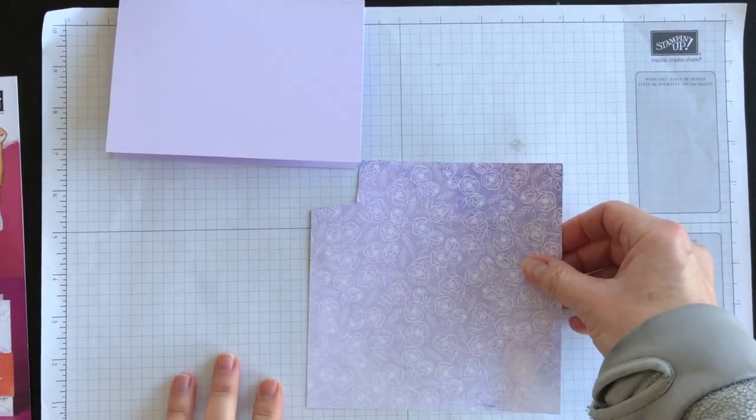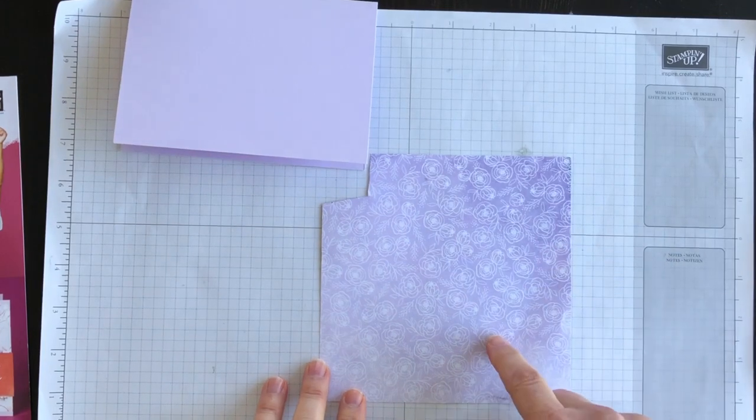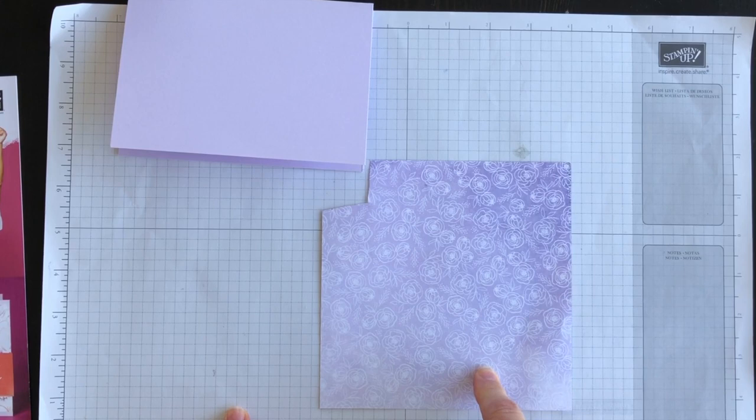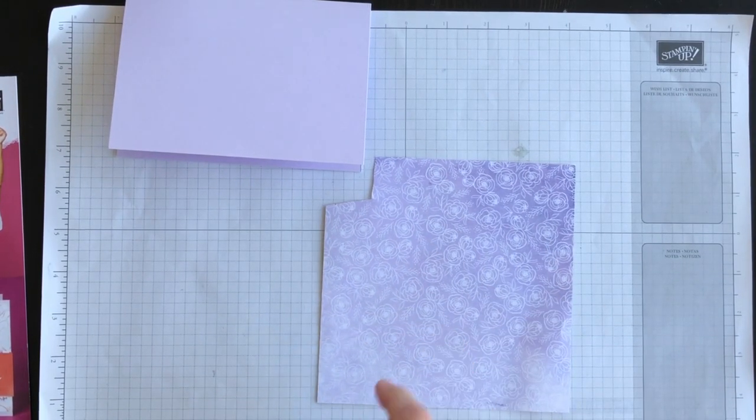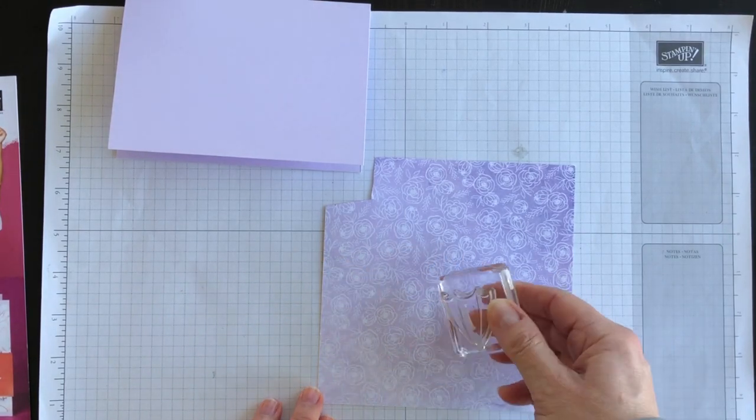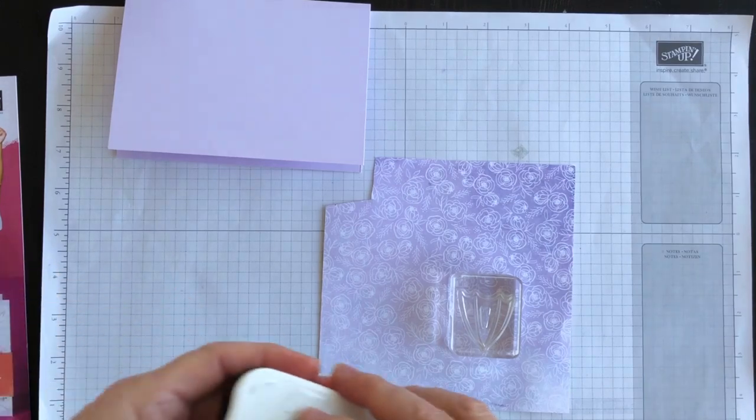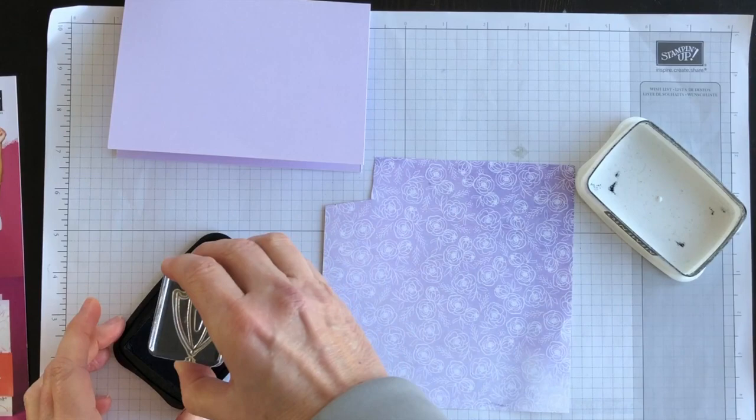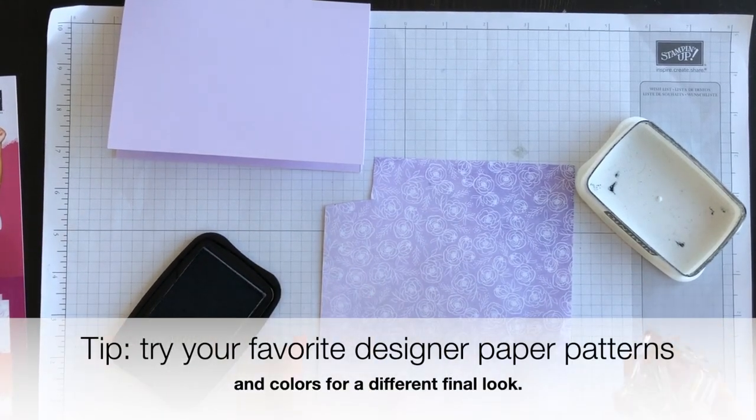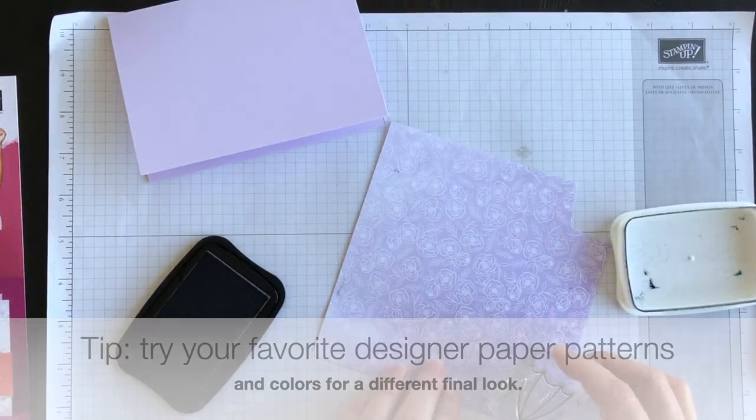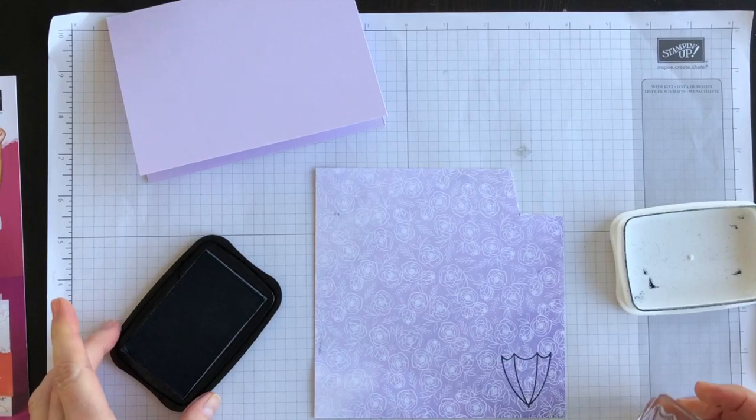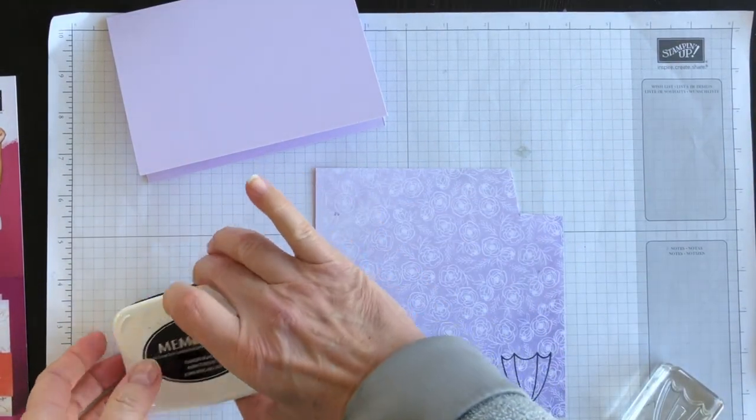This is the piece of the Purple Posy designer series paper that I'm going to use. It's from the Best Dressed Suite, but it's the sheet that has the Purple Posy color. What I'm going to do is I'm going to take the umbrella from the Under My Umbrella stamp set. I'm going to ink it up using the Tuxedo Black ink. I think I'm going to use maybe the darker part of this paper.